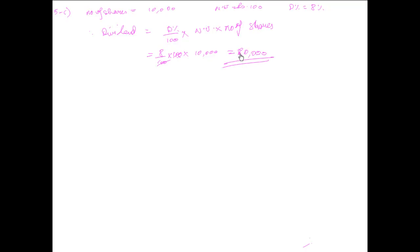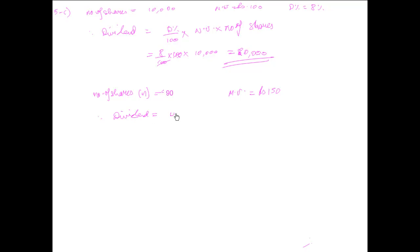Namesh had bought 90 shares at a market value of ₹150. His dividend is calculated using the same formula: dividend = (d% / 100) × nominal value × number of shares = (8/100) × 100 × 90 = ₹720. So the dividend he receives is ₹720.